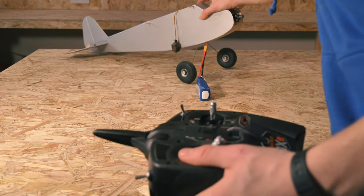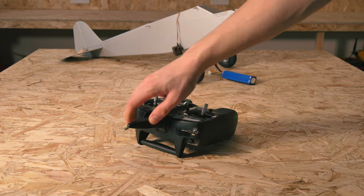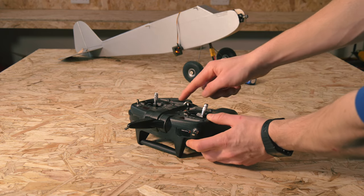Put the aircraft a little distance away and grab your transmitter. Hold down the bind button on the rear of your transmitter and flick the on switch.